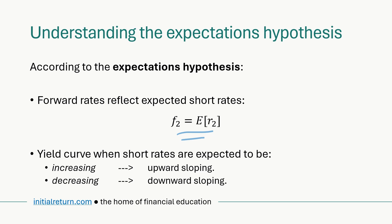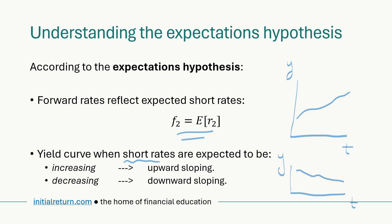We can use this theory to interpret different shapes of yield curves. If we observe an upward sloping yield curve — yields increasing with maturity — it means the market expects future short rates to be increasing. Conversely, a downward sloping yield curve means the market expects short rates to decline in subsequent years. That covers the expectations hypothesis.